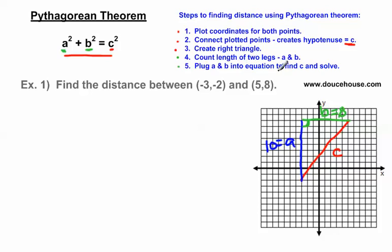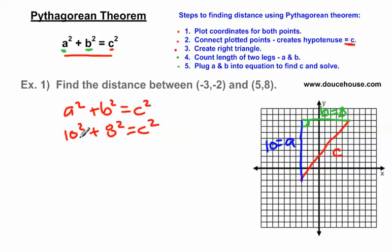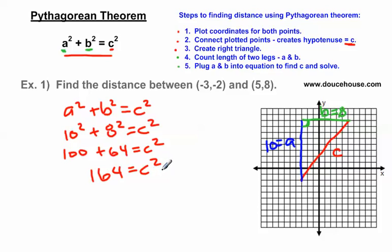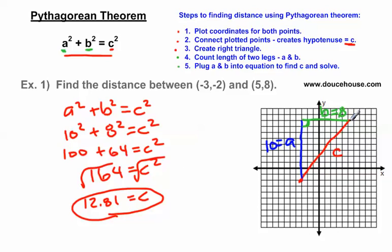Step 5 says to plug A and B into the equation to find C and solve. I'll write down the equation: a² + b² = c². I'm going to plug in 10 for A and 8 for B. 10² = 100, 8² = 64, so 100 + 64 = 164 = c². To solve for C, I need to cancel the square by taking the square root of both sides. The square root of 164 is 12.81, rounding to the nearest hundredth. So the distance between these two points is 12.81 units.